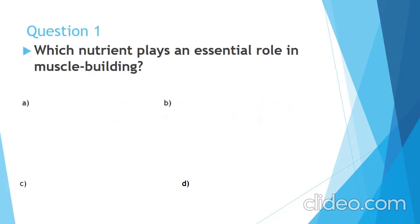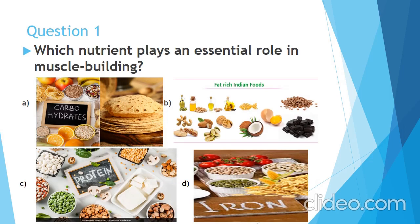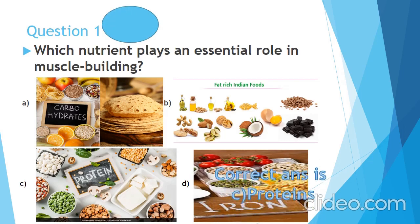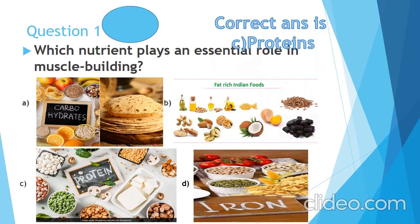Which nutrient plays an essential role in muscle building? Your options are carbohydrates, fat, protein and iron and your time starts now. Correct answer is proteins.